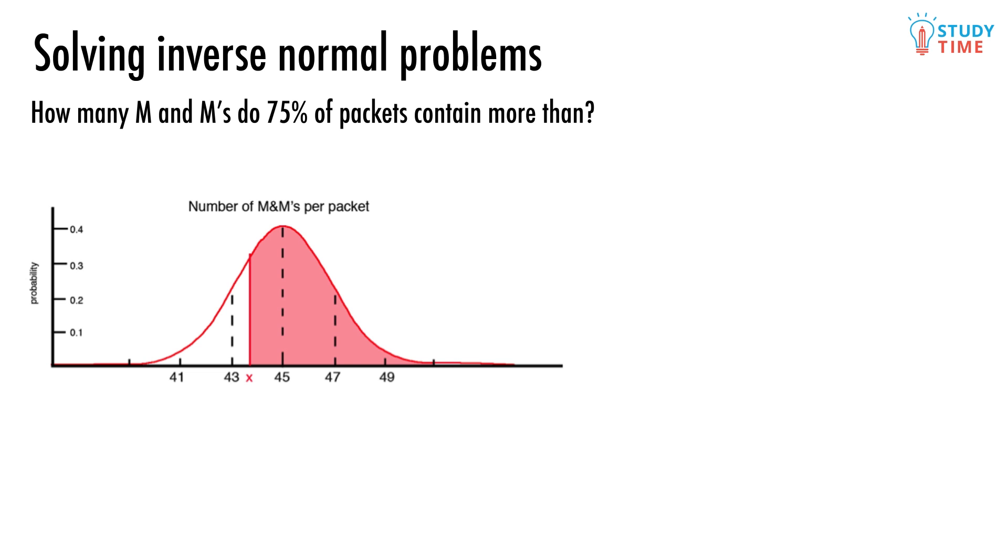On this diagram, the area that's been given to us looks like this. So we're looking for some number of M&Ms, which we've called X, that 75% of packets will have more M&Ms than. In other words, that red area we've shaded in has a probability of exactly 0.75.